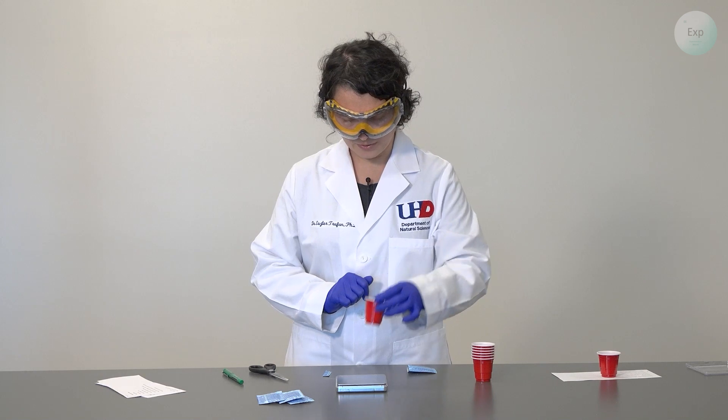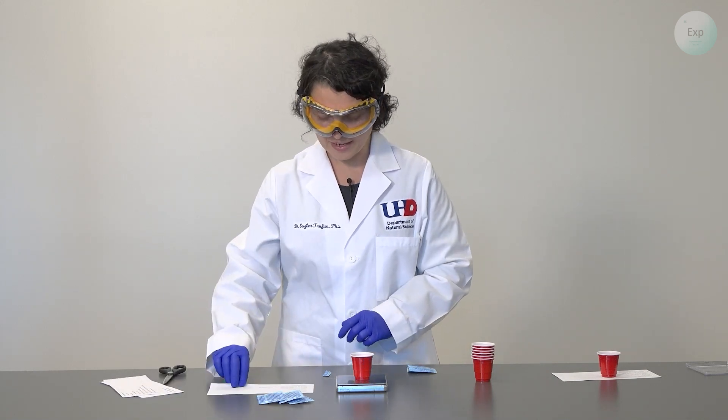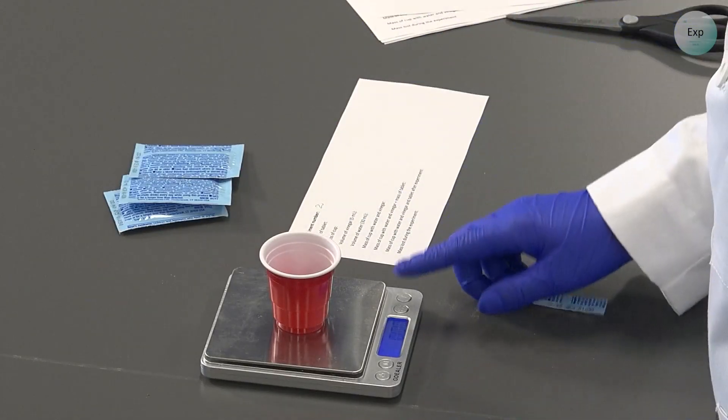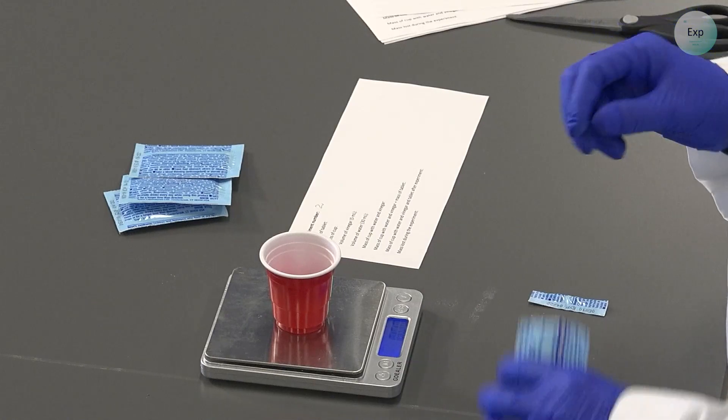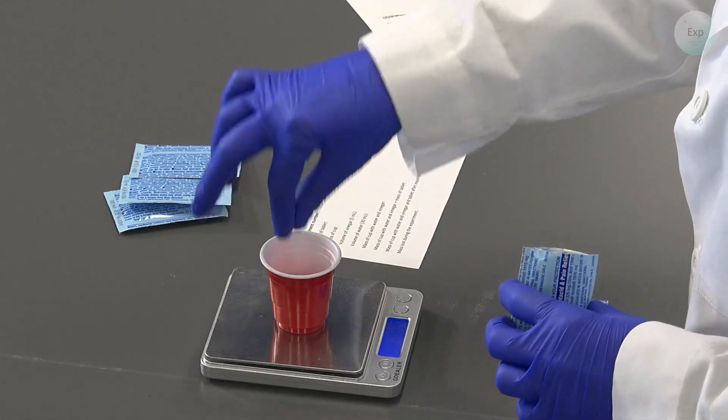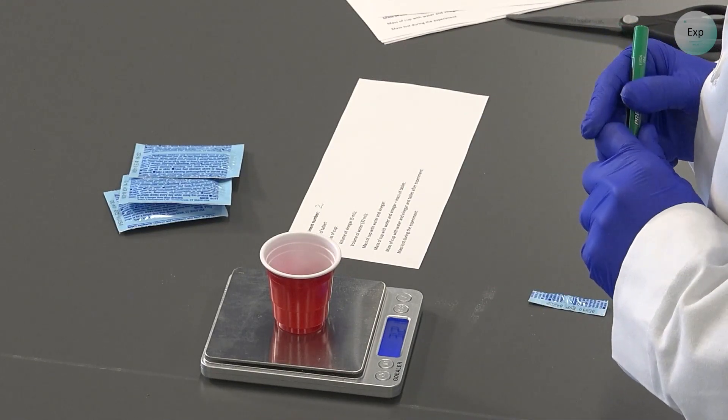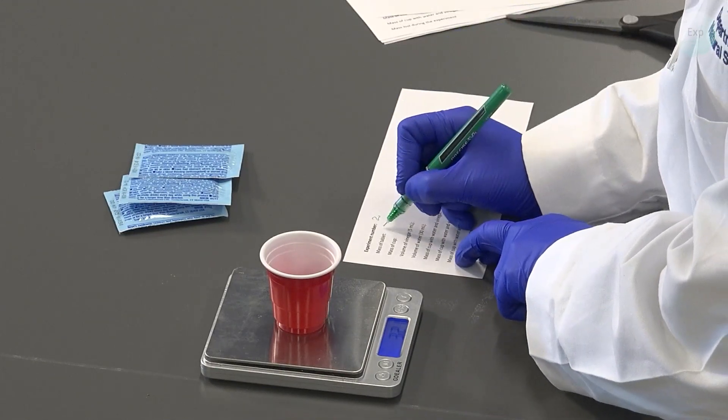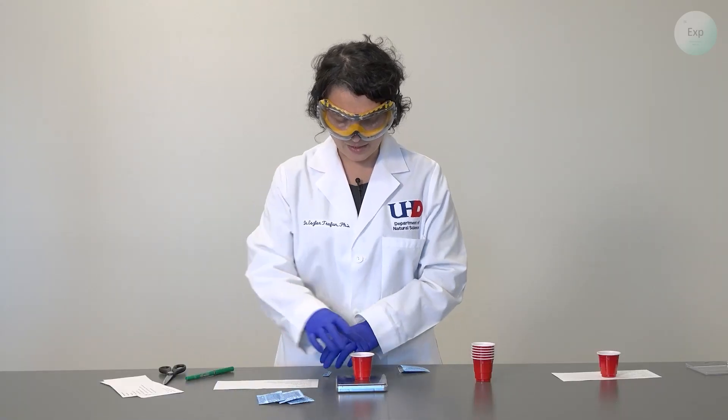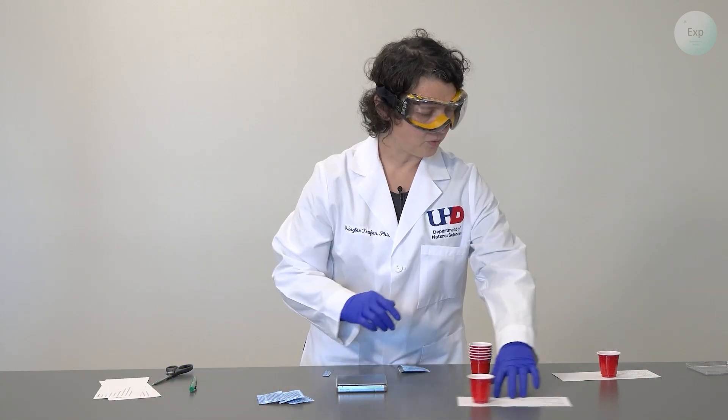Next I'm going to move on to experiment two, place another cup on the scale, take my second sheet of paper and write experiment two on it. Then I will tare my scale and place the next Alka-Seltzer tablet inside. The masses will be relatively similar so this one is also 3.21 grams. Once recorded I will place my tablet in the cup on the piece of paper and move it to the side.